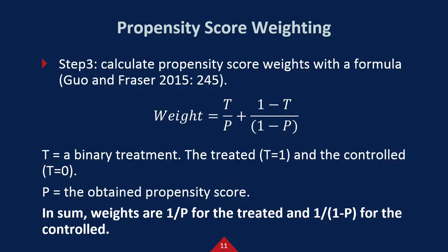The next step is calculating weights. One caveat is that the propensity score and propensity score weights are different. Weights are 1 over p for the treated and 1 over 1 minus p for the control. Here, p is an obtained propensity score.